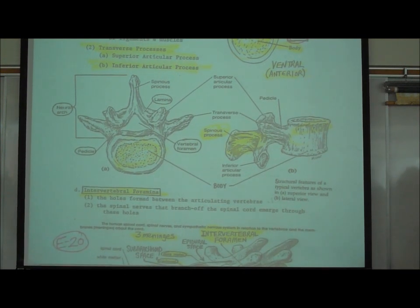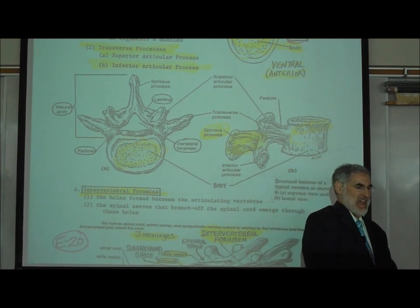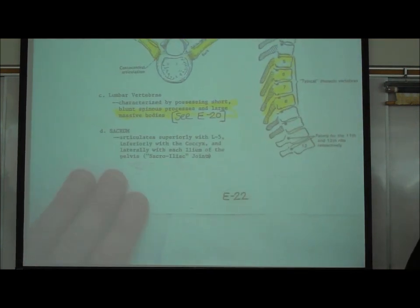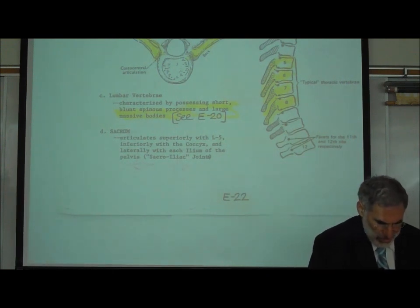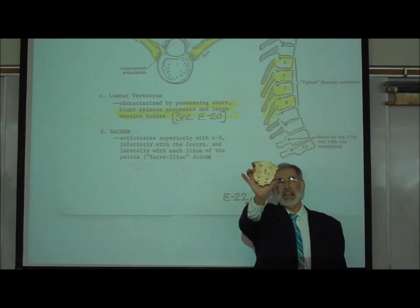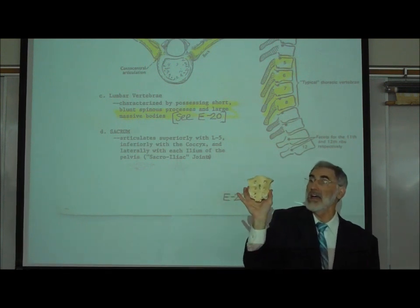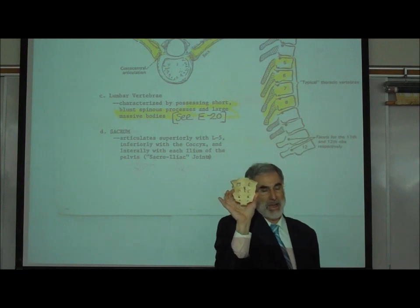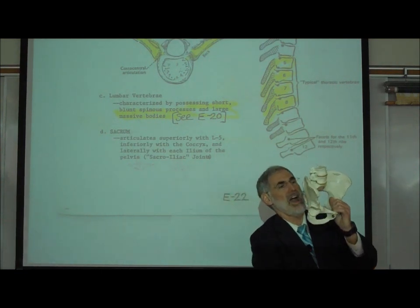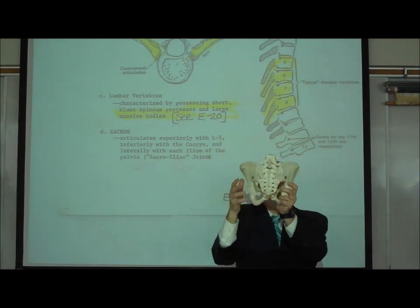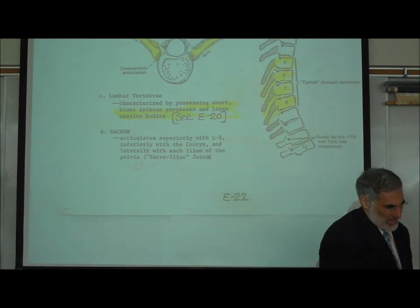The sacrum is a huge vertebra formed from the fusion of five sacral vertebrae during embryologic development. It forms the very back of the pelvis. You can see where the large sacrum vertebra sits on the backside of the pelvis.